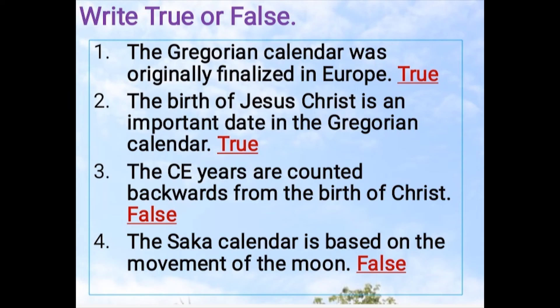Next is Write True or False. Number 1: The Gregorian Calendar was originally finalized in Europe. The answer is True.